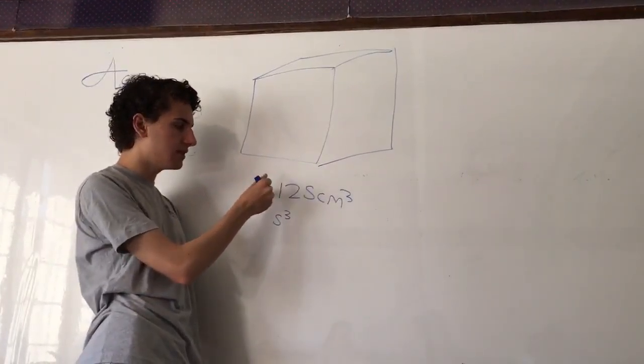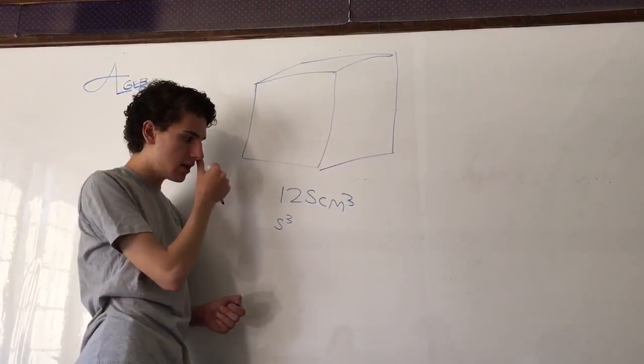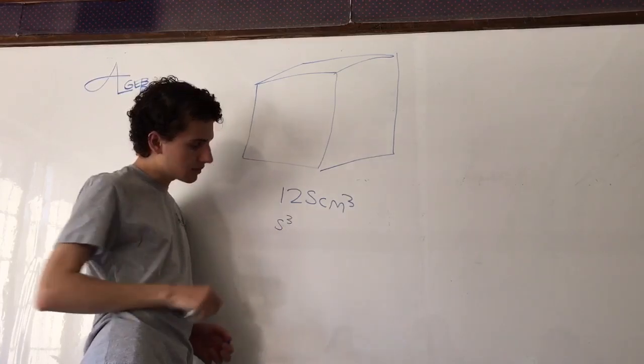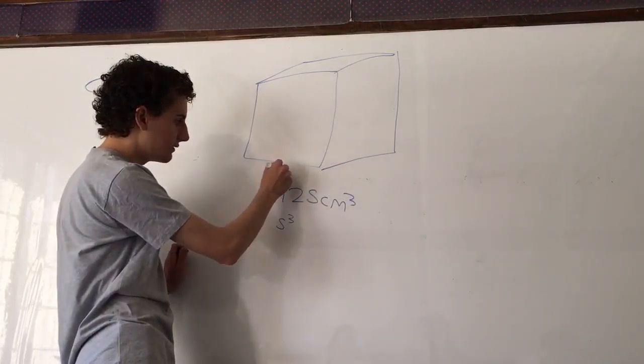But in order to find that, you'd have to take a cube root of this. So just kind of go through your cubes until you get to 125. So 5 cubed equals 125. We know that the side length is thus 5 centimeters.